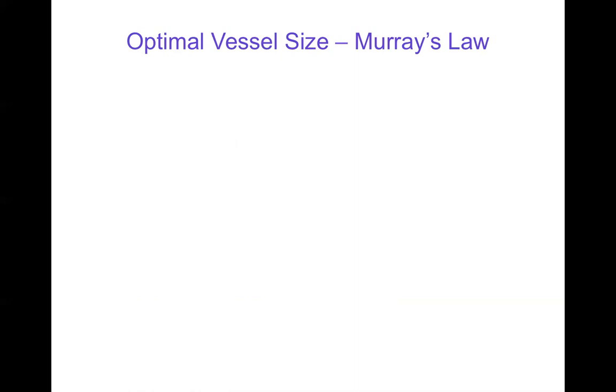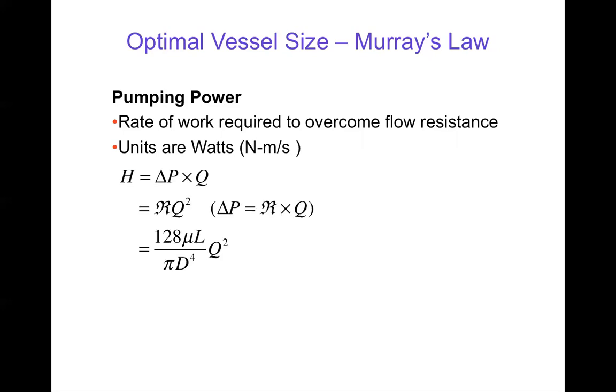Using Poiseuille's law, we can derive a relationship for if you have a certain amount of blood flow, what size vessel should carry that flow. This relationship we're going to derive is called Murray's law. You can think about pumping power—the rate of work required to overcome flow resistance—the units would be watts. We can write that this work required to pump blood is pressure drop times flow, similar to how you would look at the work required to move current through a resistor. If we know that pressure drop is resistance times flow, then we can eliminate the pressure drop and show that the work required to pump blood, volume of blood Q per unit time, is the resistance times Q squared.